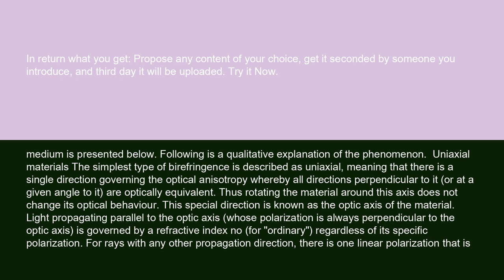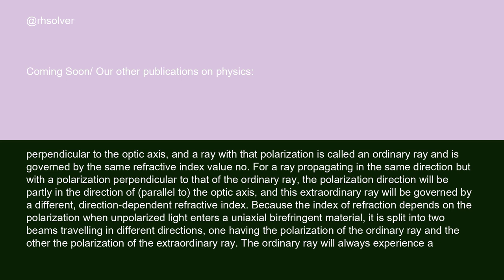This special direction is known as the optic axis of the material. Light propagating parallel to the optic axis, whose polarization is always perpendicular to the optic axis, is governed by a refractive index known as the ordinary index, regardless of its specific polarization. For rays with any other propagation direction, there is one linear polarization that is perpendicular to the optic axis. A ray with that polarization is called an ordinary ray and is governed by the same refractive index value n-o. For a ray propagating in the same direction but with a polarization perpendicular to that of the ordinary ray, the polarization direction will be partly parallel to the optic axis, and this extraordinary ray will be governed by a different direction-dependent refractive index.